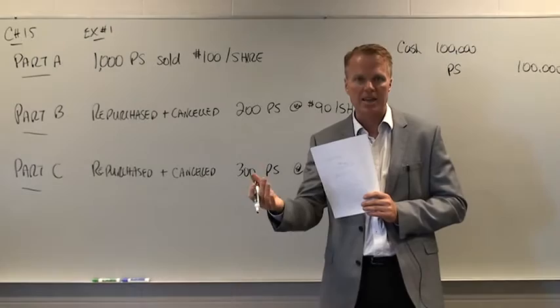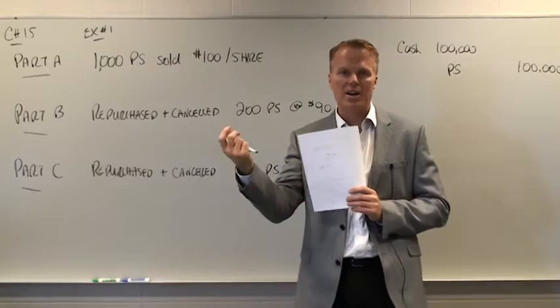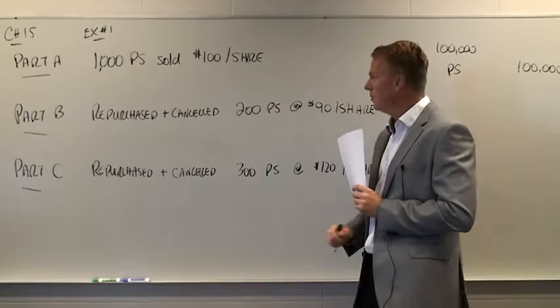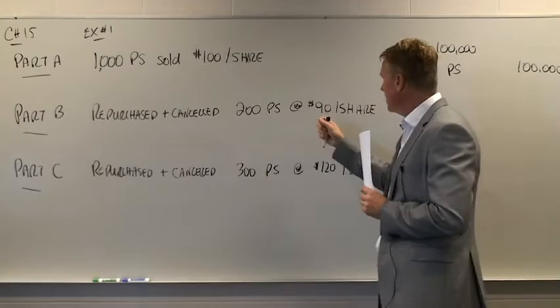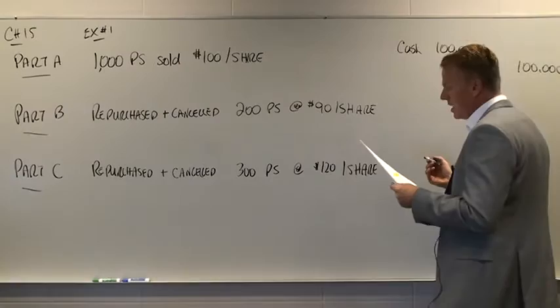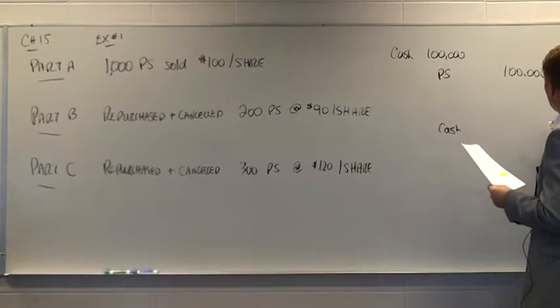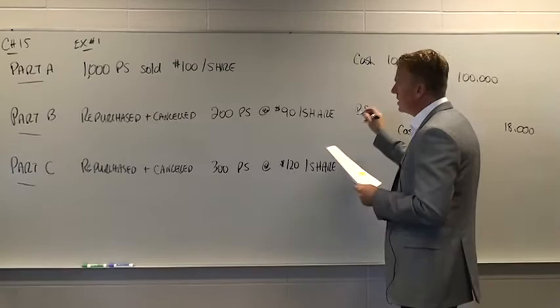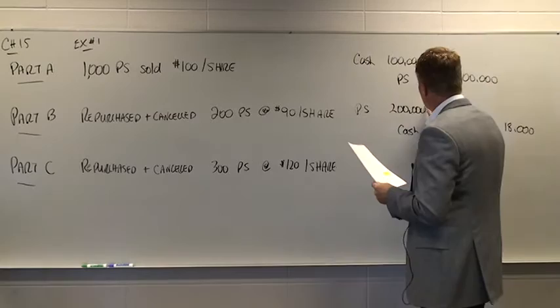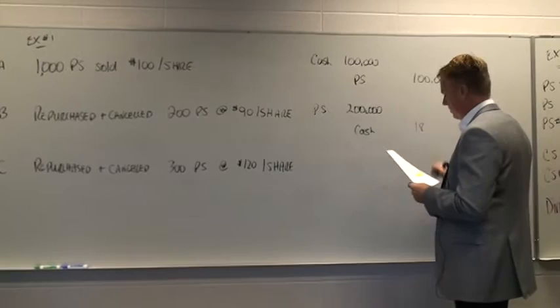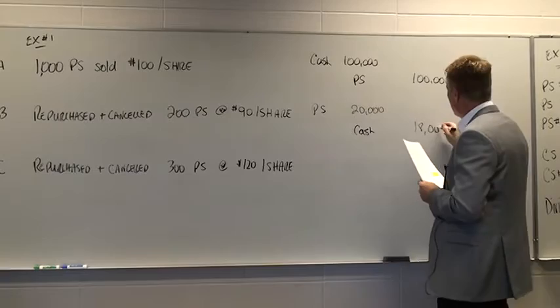Now over time, companies may want to buy back some of their shares for a number of reasons. Let's say this company is very successful, has a lot of extra cash, and they just want to buy them back. So in this Part B of the example, they repurchased and cancelled 200 of their preferred shares. Now they paid $90 a share to do this. So let's start with the easiest parts. If they paid $90 a share, they paid $18,000. And we paid $18,000 in cash.